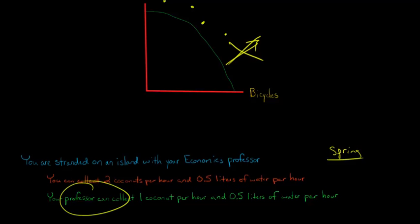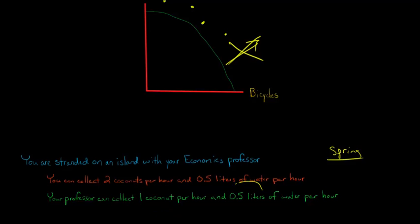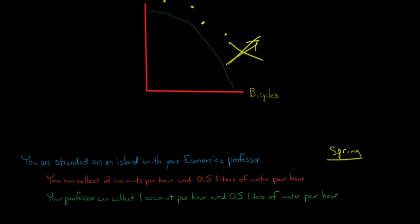Your professor can also collect coconuts and water, but he or she can only collect one coconut per hour and also half a liter of water per hour. So you each can get half a liter of water per hour, but if you decide to use that hour to collect coconuts, you're going to do a lot better job. You have an absolute advantage in producing coconuts — you can produce two coconuts an hour while your professor can only produce one.